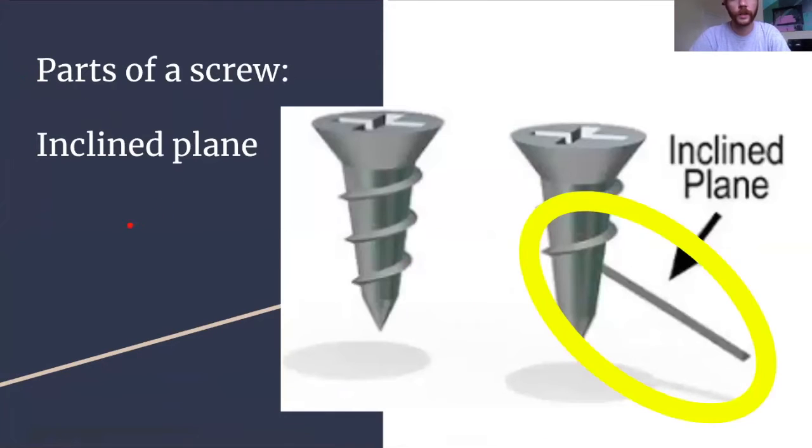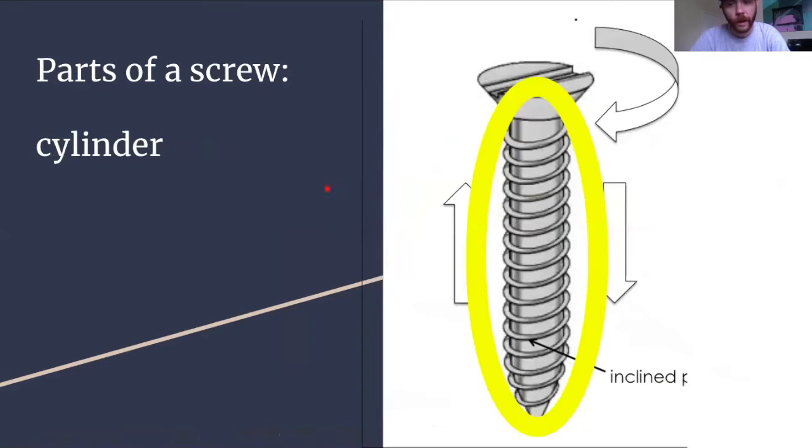Parts of a screw: a screw is made of an inclined plane, which is the part here, the sharp part that goes on the outside that is wrapped around a cylinder. The inclined plane goes up here in little tiny circles. So that way, as the screw turns in a circle, the load is moved up or down.